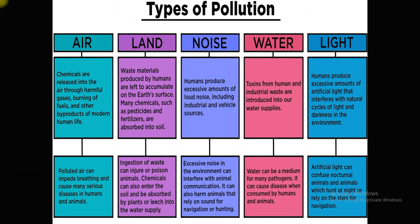Noise pollution involves excessive amounts of loud noise from industrial or vehicle sources produced by humans. Excessive noise can interfere with animal communication and harm animals that rely on natural sounds for navigation or hunting. Water pollution occurs when toxins from human and industrial waste are introduced into water supplies; water can be a medium for many pathogens, causing disease when consumed by humans and animals. Light pollution occurs when humans produce excessive artificial light that interferes with the natural cycle of light and darkness, confusing nocturnal animals that hunt at night and rely on stars for navigation.